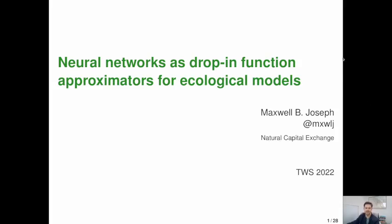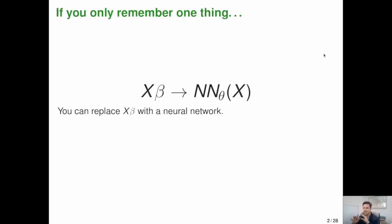All right, great. So my name is Max Joseph, and today I'm going to be talking about neural networks as drop-in function approximators for ecological models. If you only remember one thing from this talk, it's that if you've got a model with something like x times beta, like a design matrix times a parameter vector, that's approximating a function. And if you want to, you can replace that with a neural network. And I'll tell you how.